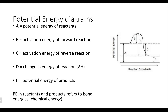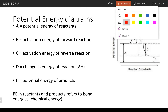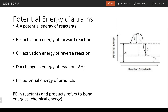Looking at letter D first — the change in enthalpy: the delta sign (that triangle) is always final minus initial. So with delta H, it's just the products minus the reactants in terms of their potential energy — just the difference between the starting and final spots on these diagrams. Whereas B and C are looking at activation energy in both cases. The only difference between these is forward and reverse reaction.